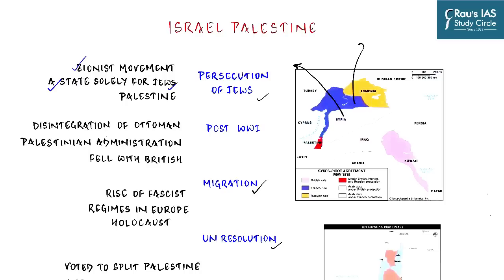The Zionist movement decided Jews would unite and move to a location to establish their own state — Palestine was the place identified. Once this was decided, they began to migrate. This migration was enabled by the special situation created by World War One: the Ottoman Empire, which controlled most of the Middle East, disintegrated, and the administration of the Palestinian region was handed to the British. This arrangement, where British, French, and Russian governments divided the region, is known as the Sykes-Picot Agreement.